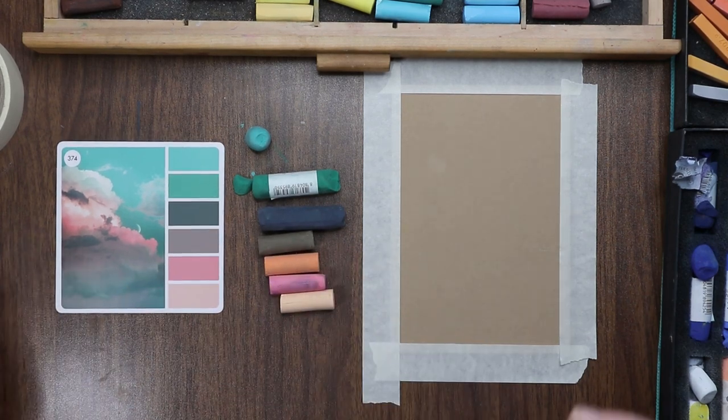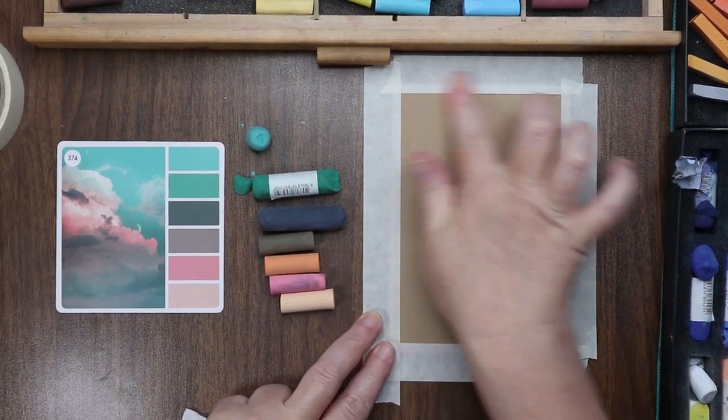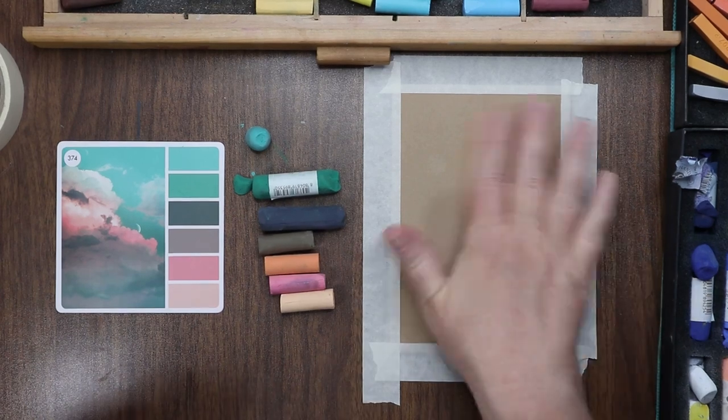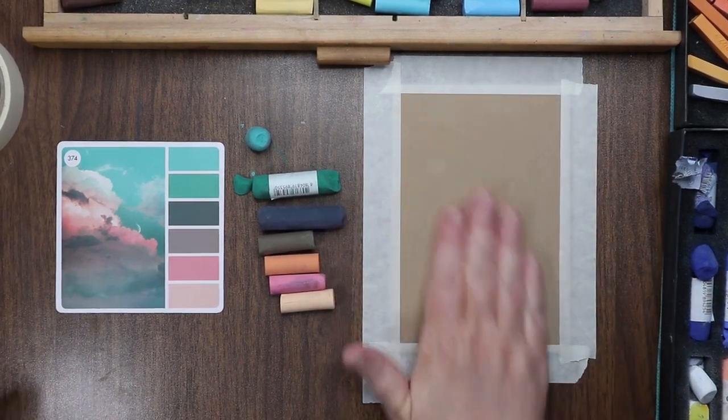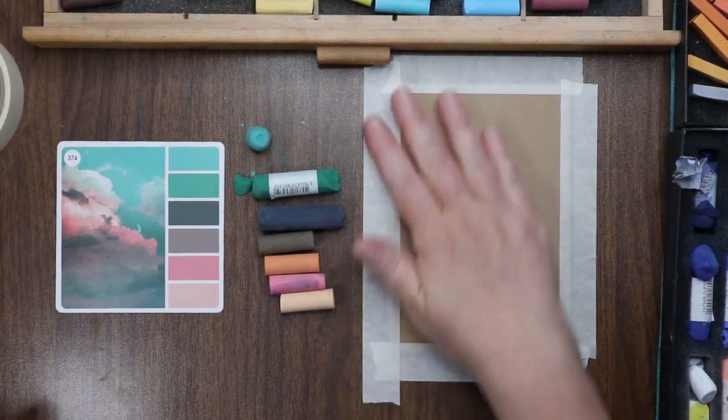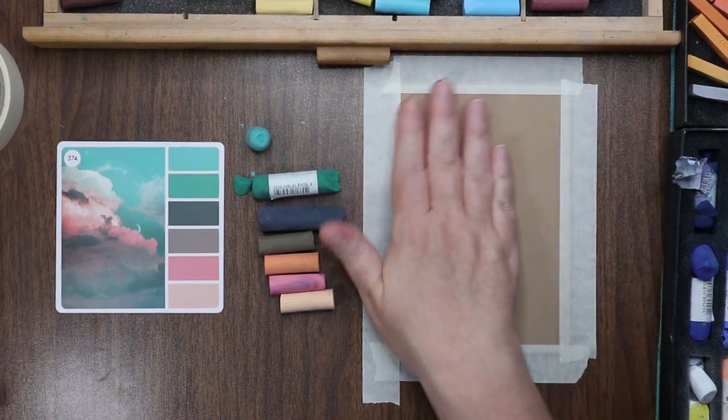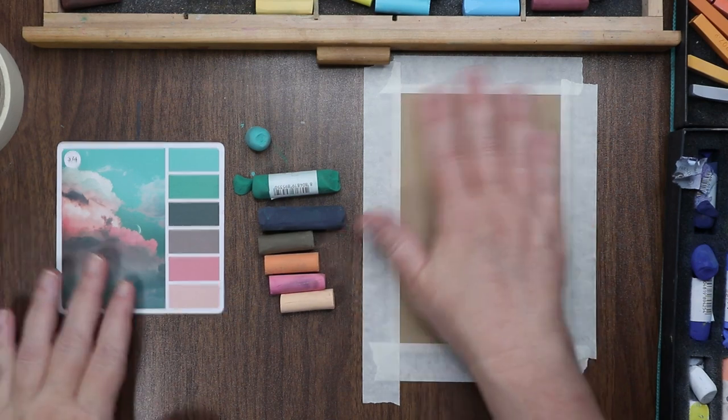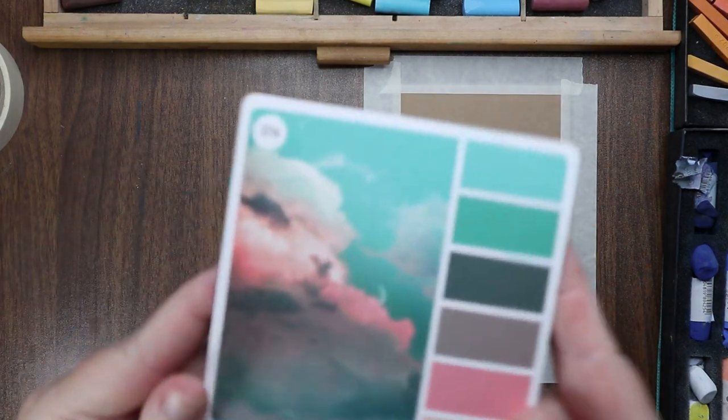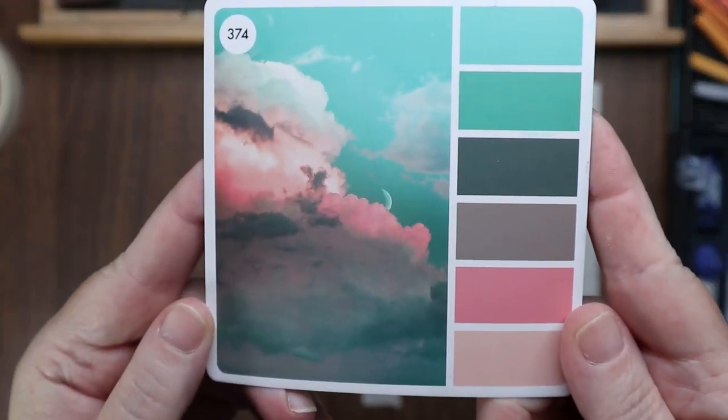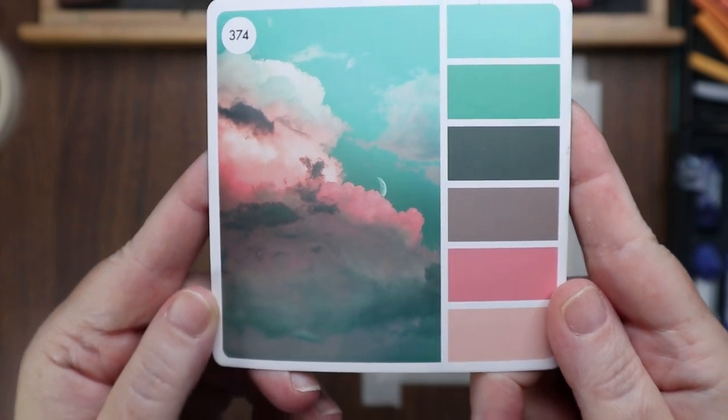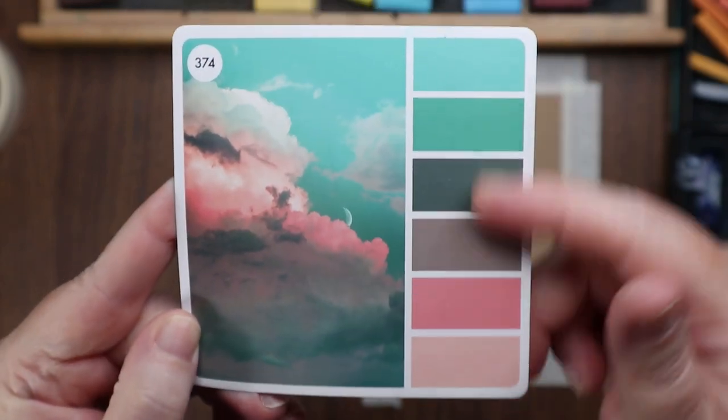We're having a hard time today. All right, as long as it's not shining directly on the reference photo we should be fine. Today we are going to be working on velour paper again. This is a nice camel colored brownish piece. It's very soft and veloury feeling.